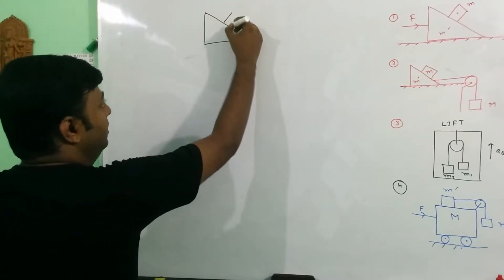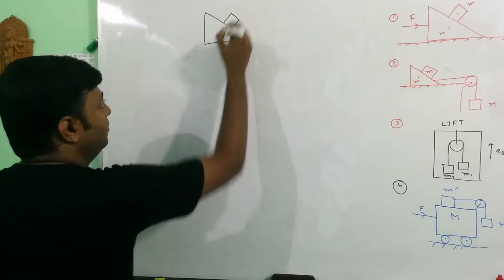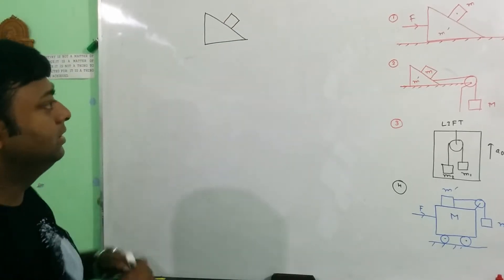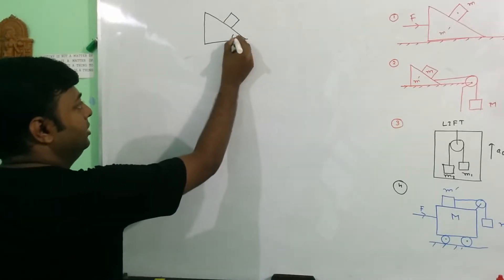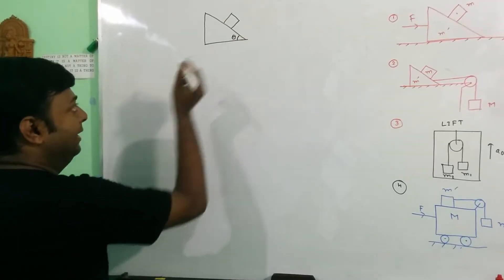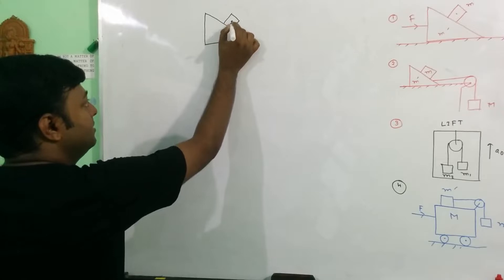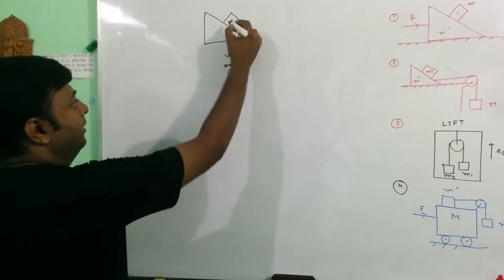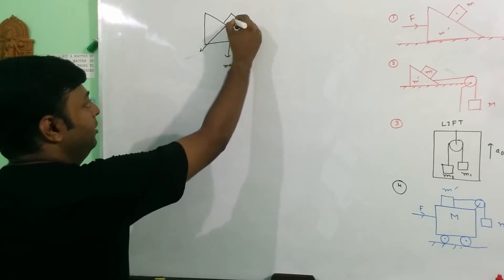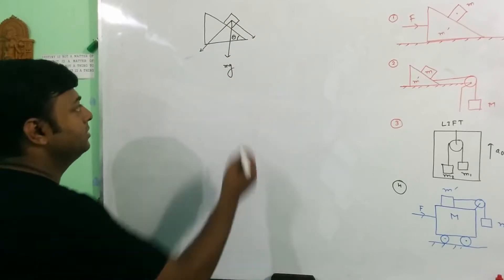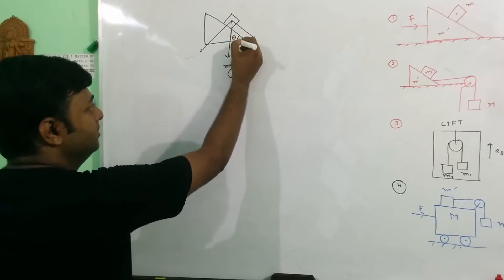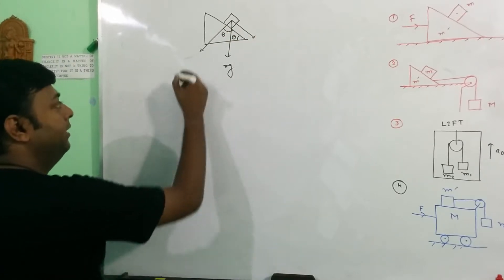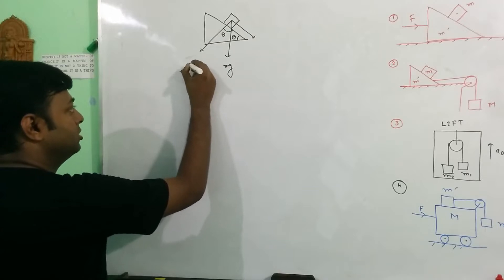If we want to solve this problem, we first consider this angle theta. We always resolve the downward direction — that is mg. This is the component of mg; because mg is a vector quantity, it is resolved into components. This angle is theta, and the component is mg sin theta.